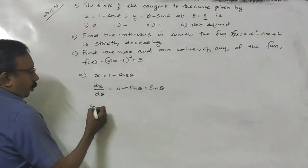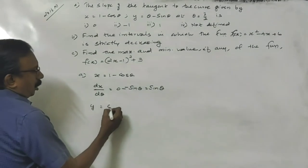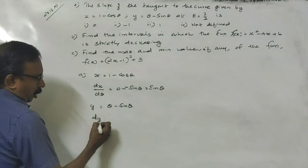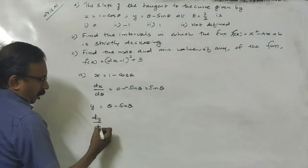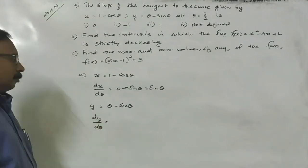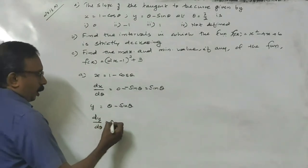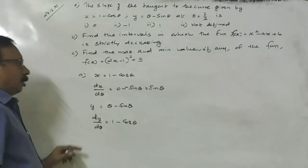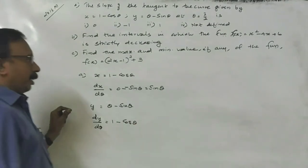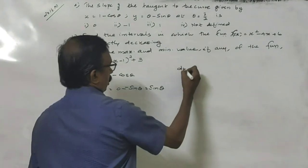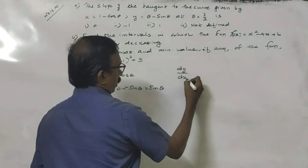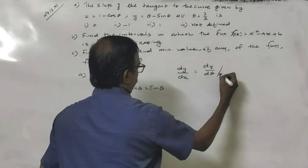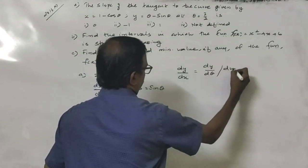Now, y is equal to θ minus sinθ. Therefore, dy/dθ equals 1 minus cosθ (rate of θ is 1, derivative of sinθ is cosθ). Therefore, dy/dx equals (dy/dθ) divided by (dx/dθ).